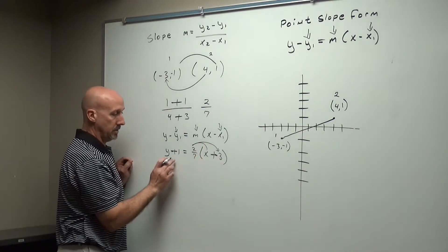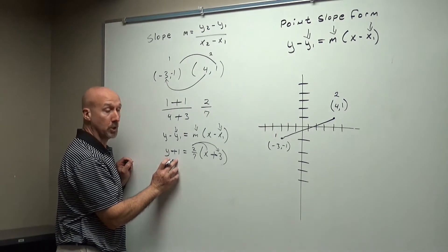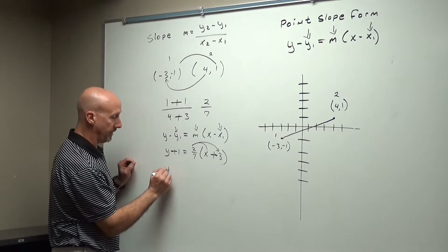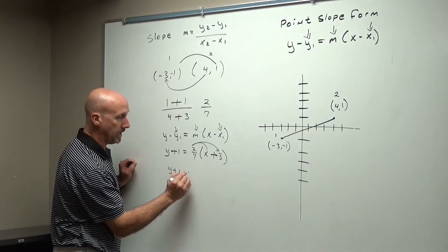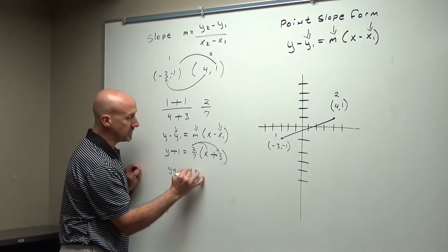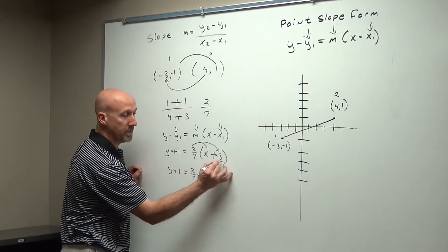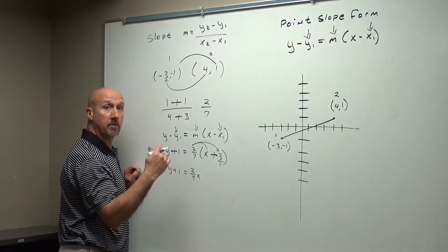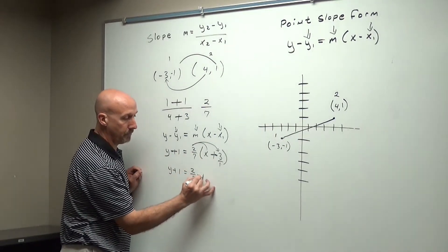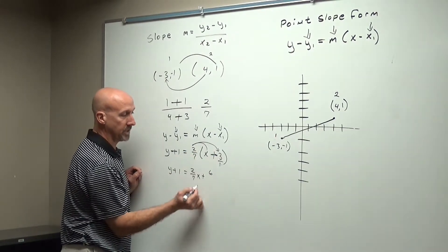Now distribute. We have to get the y by itself to get slope intercept form, so we're going to distribute. So I've got y plus 1 equals 2 sevenths times x is just 2 sevenths with an x next to it. This one here, 3 is like 3 over 1, so in fractions we multiply top times the top. 2 times 3 is 6,